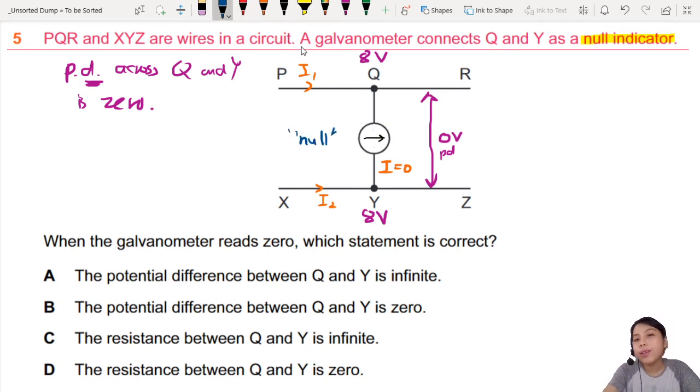So now that you have this understanding in your brain, now let's go through the statements. A. The potential difference between Q and Y is infinite. Are you? You know what this is saying? PD between X and, sorry, Q and Y is infinite.